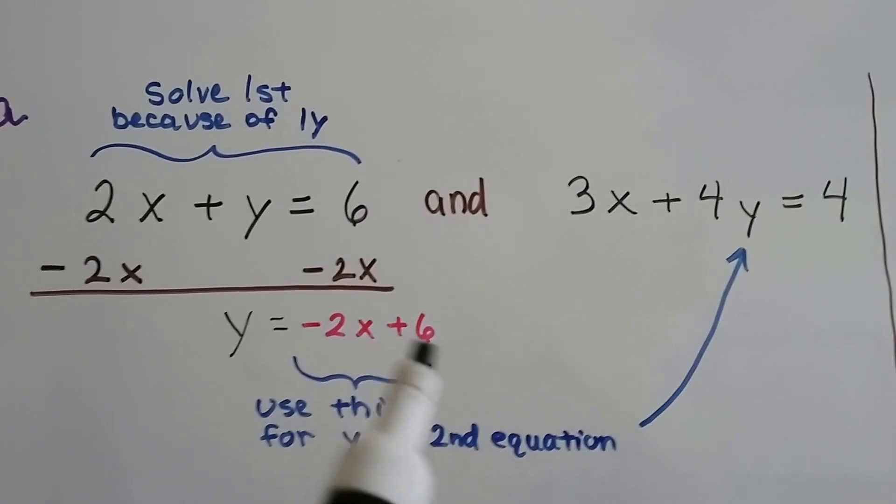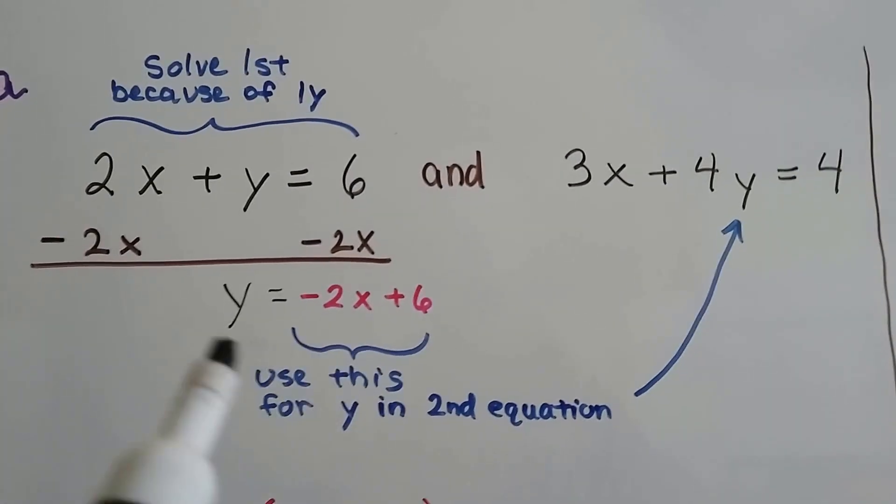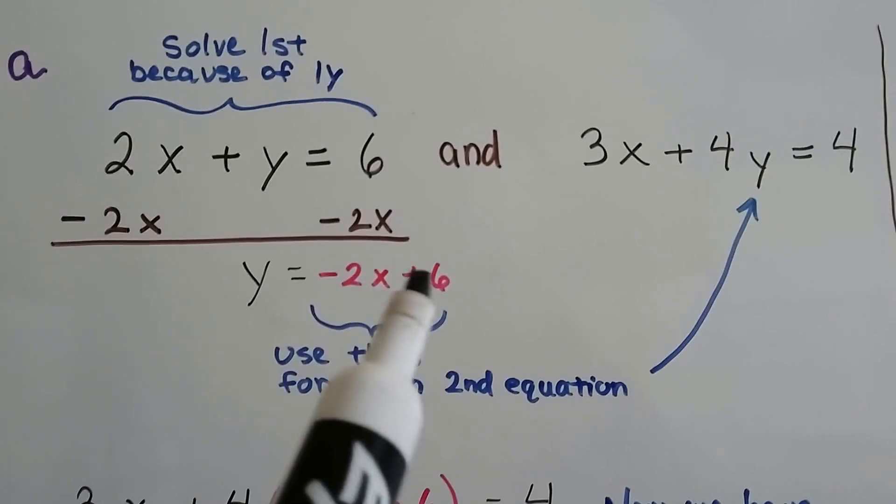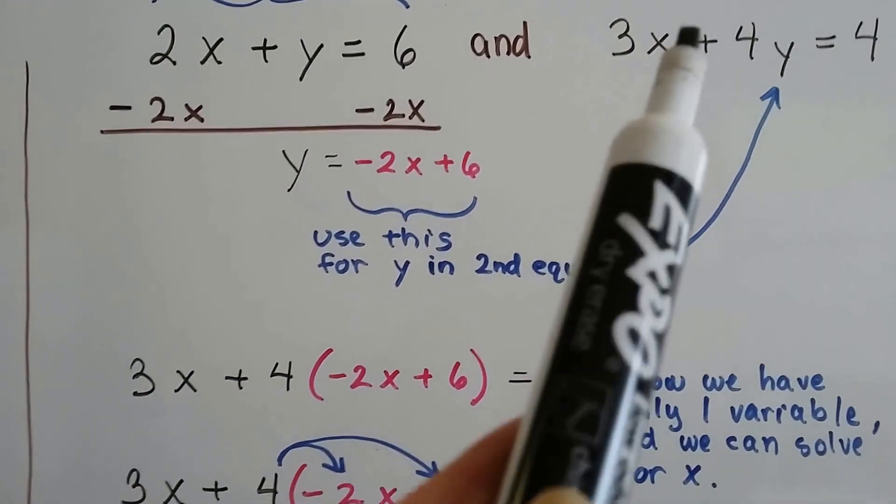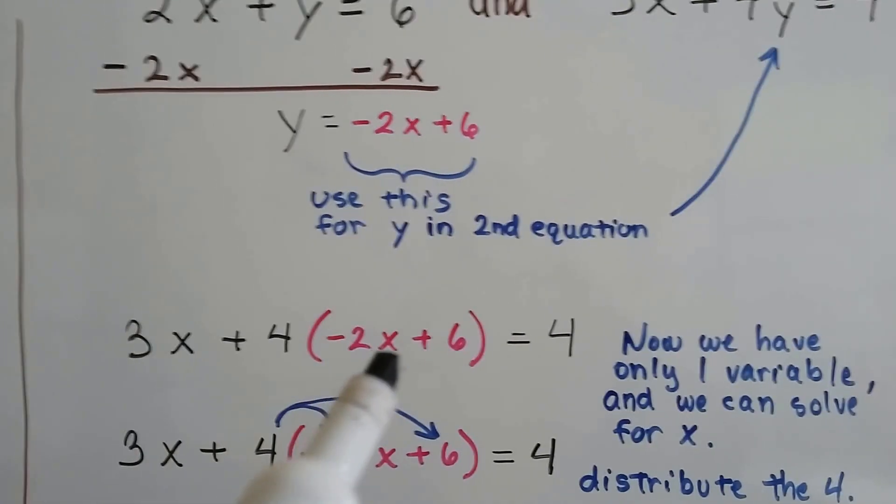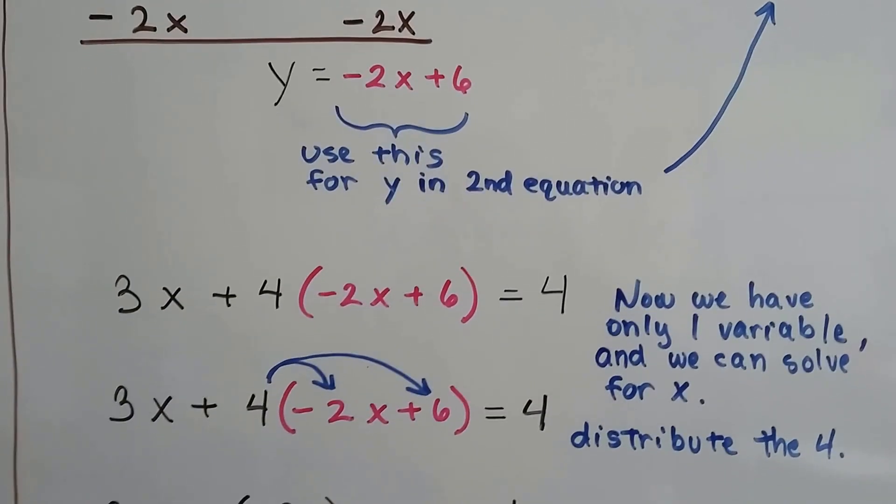This creates a zero pair, and we get y equals negative 2x plus 6. Now we're going to use this entire pink part into this equation for the y, because this is what y equals. This is what y stands for. So we plug this in, in place of that y, in this equation. Now we have 3x plus 4 times negative 2x plus 6 equals 4. Now we only have one variable, and we can solve for x.